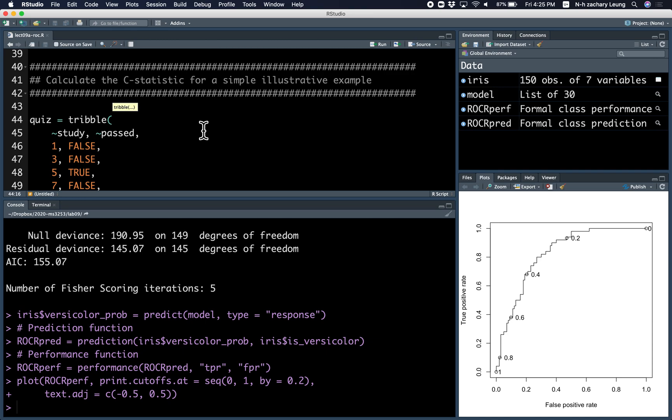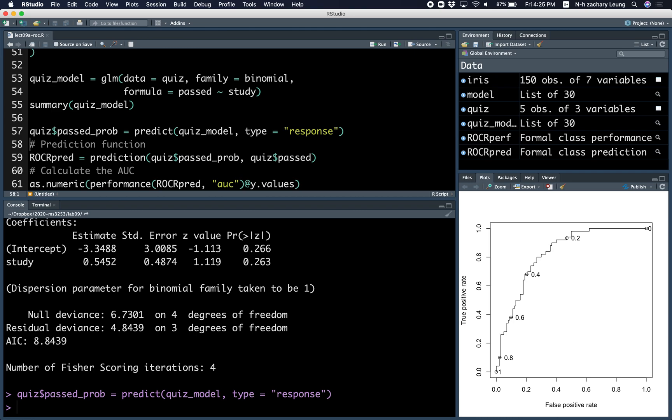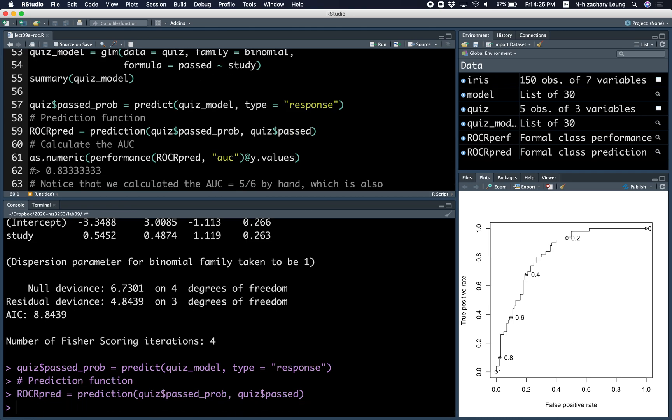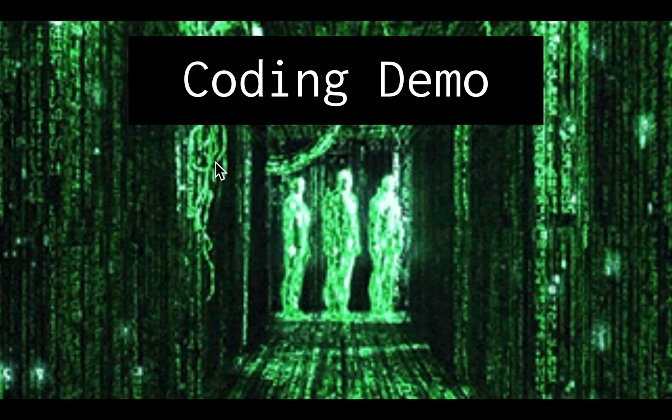And here's how you calculate the C statistic for a simple illustrative example. So very simple logistic regression model. Calculate the same things as ROCR. Calculate the predicted probabilities, the prediction function, and then you can calculate the performance, which is basically one of the values of the performance function. So the value, the C statistic, the AUC, which equals the C statistic, the AUC is equal to the C statistic, which we calculated by hand, which is also 0.8333, which is AUC. So just this very small example just helps you to remember that the C statistic is equal to the AUC. And it shows you how to calculate the C statistic by hand.